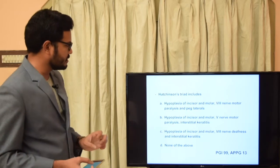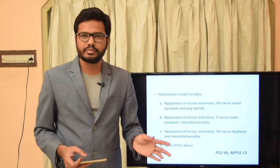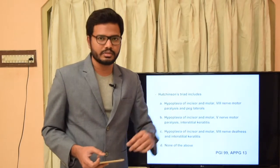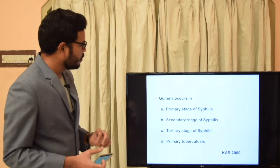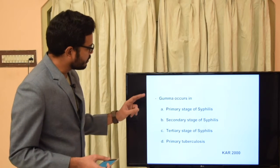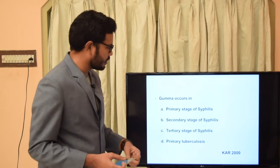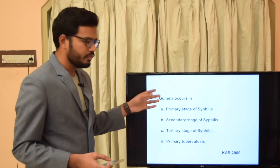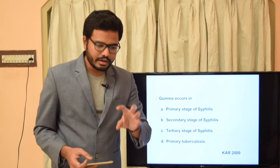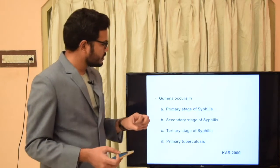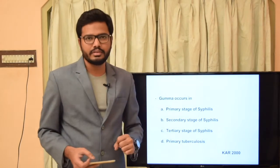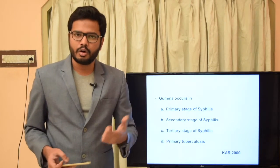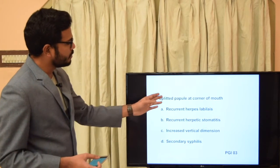The triad includes eighth nerve deafness, interstitial keratitis, screwdriver-shaped incisors, and mulberry molars — hypoplasia of these teeth. Moving on: gumma occurs in which stage? Asked in Karnataka 2000. Gumma is a soft, non-cancerous growth — a granuloma or granulation tissue — typically seen in tertiary syphilis. Common oral sites include the palate and tongue.